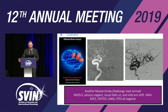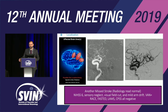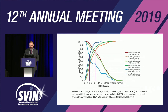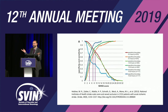Here's another example: NIHSS of 6 with neglect, arm weakness, and a vision cut — most people would pursue thrombectomy for that. Nothing is perfect. You're either going to be sensitive or specific — you can't have it both ways. The Switzerland group also showed that for late-window strokes, between 6 and 24 hours, LVOs present with an average NIHSS of only 4 to 6, because their collaterals are so good they come in late.